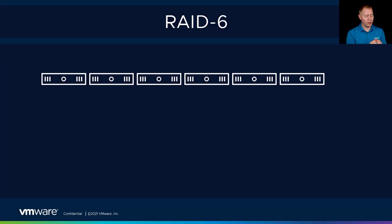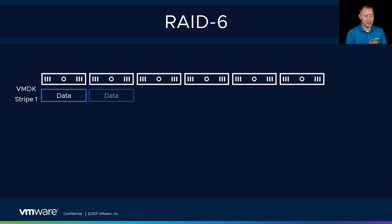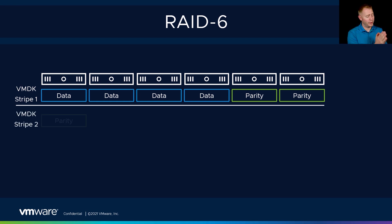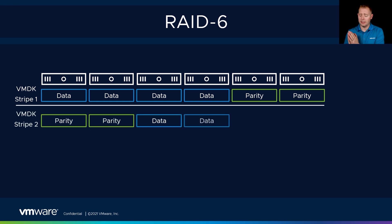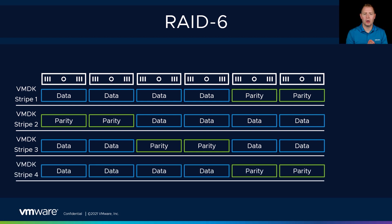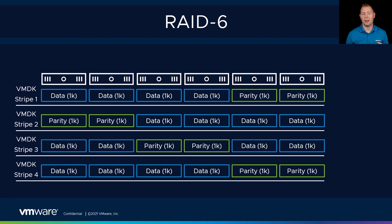So for stripe one, we'd have data, data, data, data, parity, parity. Then for our second stripe, we'll have parity, parity, data, data, data, data. We keep rotating and repeating that process — all using 1K block sizes for each one of those blocks.